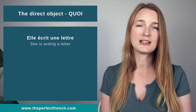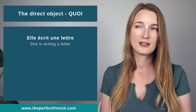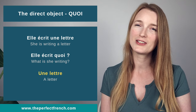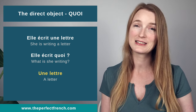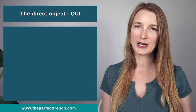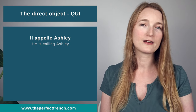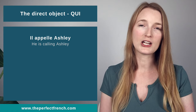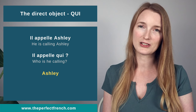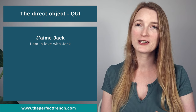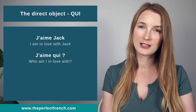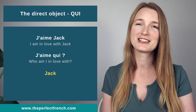Now two sentences with qui. Il appelle Ashley. Il appelle qui? Ashley. Ashley is the direct object. Another one: J'aime Jack. J'aime qui? Jack. Jack is the direct object.